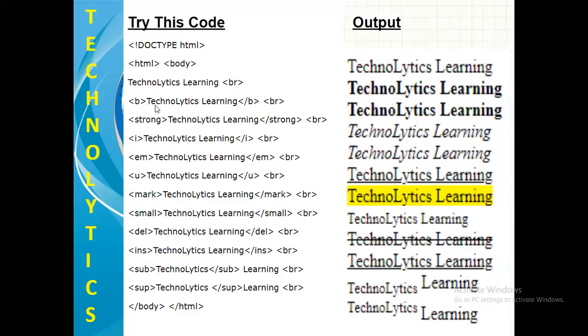For the new line, I have given the effect B. This is my formatting tag B for making the text bold or you can say the darken. So, TechnoLytics Learning is a little darken. Next is strong. Again, it is darken.